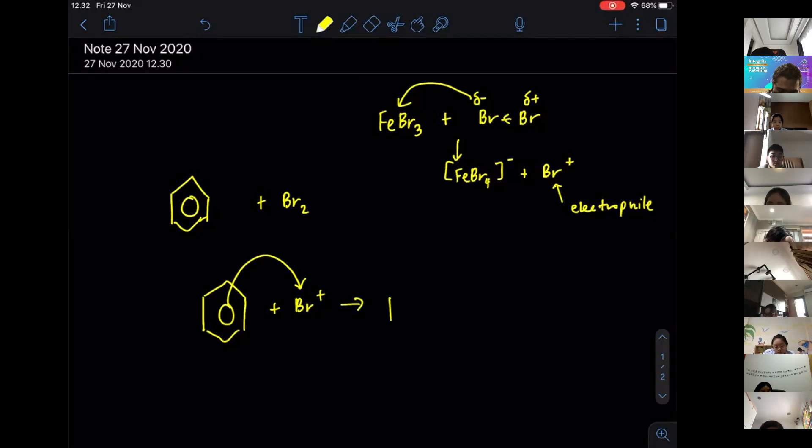So what happens is you are going to have an intermediate where there is H. Earlier they didn't show the H, but it's there. There is H, and then there is going to be a bond between Br. And then now, the electrons ring is not completed, so it's going to be something like this.